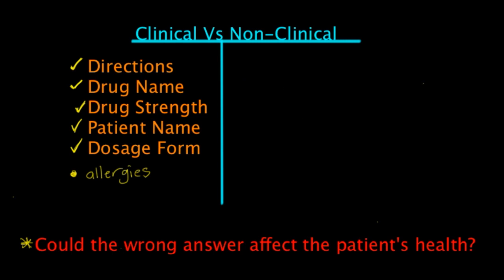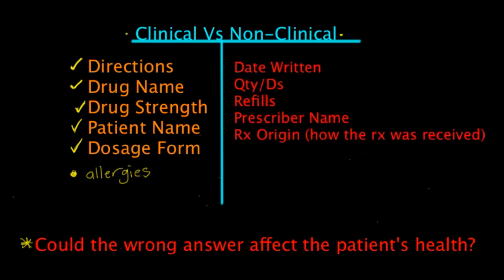Now for the non-clinical information. Date written — is the prescription being written for the wrong date going to affect the patient's health? No, so that's something you can determine yourself. The quantity and day supply — if the directions are correct, you should be able to determine the quantity and day supply, so that isn't necessarily going to affect the patient's health.